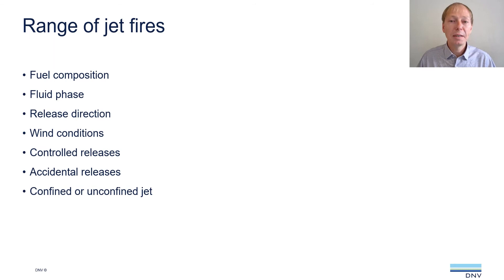One of the things that makes it difficult to model Jetfires is that Jetfires can come in many different ways. The characteristics will vary depending on things like the fuel composition, the fluid phase, the release direction, and wind conditions. It may be a controlled release that causes a jet flare or it can be an accidental release, and the release could happen in an unconfined or confined area. A range of different Jetfire scenarios are possible and should be considered when assessing the hazards from such fires.